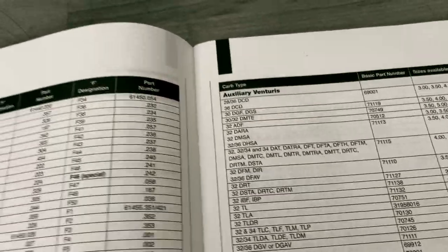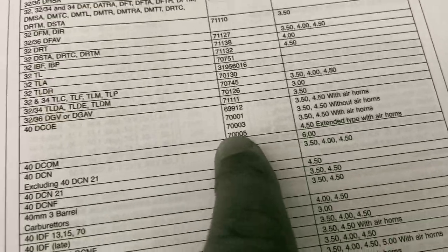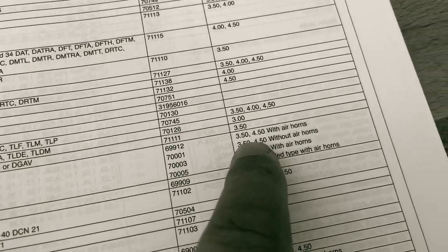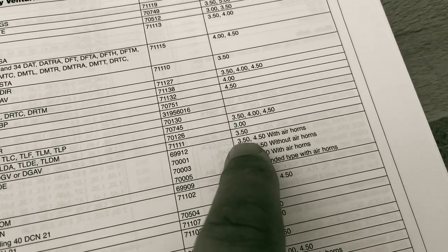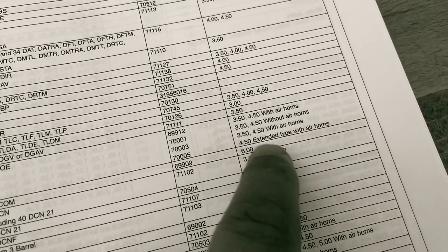Okay, these are the auxiliary venturis. We have the 40 DCOE - there are five types, or rather you have 3.5mm, 4.5mm, and that's the extended type.